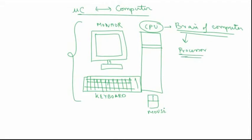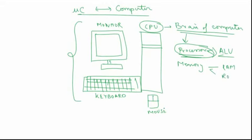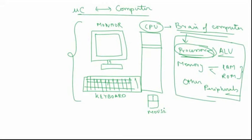This processor performs all the arithmetic and logical functions in a computer — all the calculations, all the algorithms that have to be performed are performed here in the processor. In addition, your CPU also contains some other things like memory — memory in the form of RAM and ROM. I'm sure you are familiar with these terms. The CPU also has some other peripherals, and all this plays the most important part in a computer.